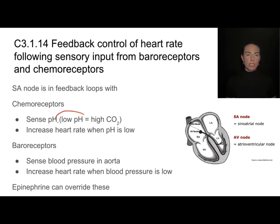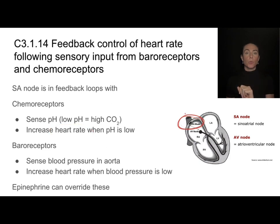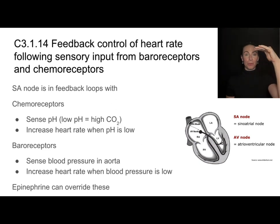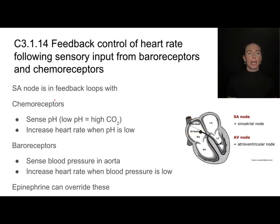When the pH is low, the medulla oblongata sends a message along the sympathetic nerve to increase heart rate, telling the SA node to speed up. When the pH returns to normal, it sends a message along the vagus nerve to slow that heart rate back down. So it's in a feedback loop with the chemoreceptors.